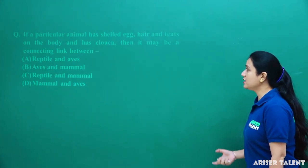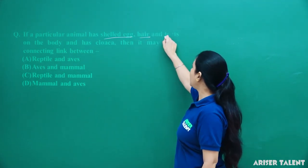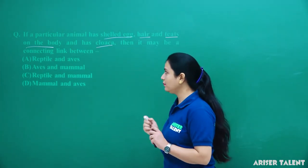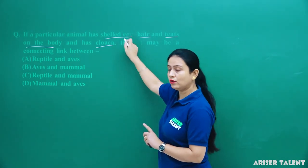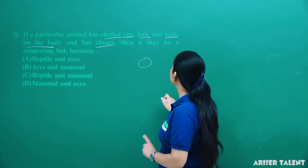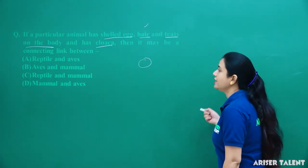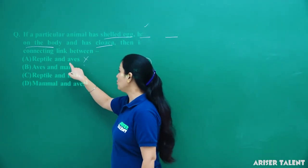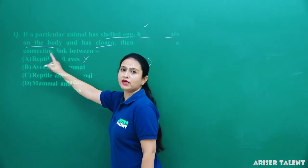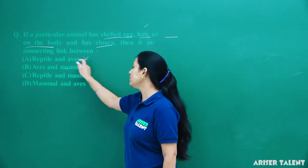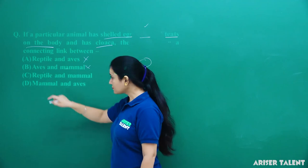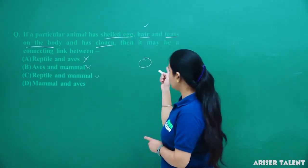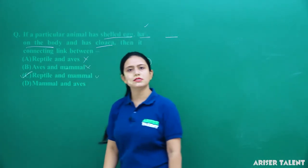If a particular animal has a shelled egg, hair and teeth on the body, and has a cloaca, then it may be a connecting link between which groups? Shelled eggs are generally found in Reptilia. Hair is present in Mammalia. So the options: Reptilia and Aves — no, it does not have features of Aves. Aves and Mammals — it has features of mammal but not Aves, so wrong again. Reptilia and Mammalia — yes, because it has features of both Reptilia and Mammalia. Thus this organism is a connecting link between Reptilia and Mammalia. This is the correct option.